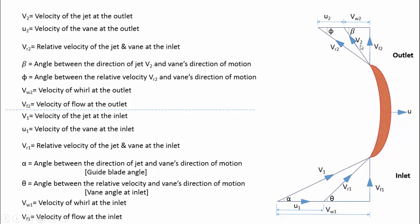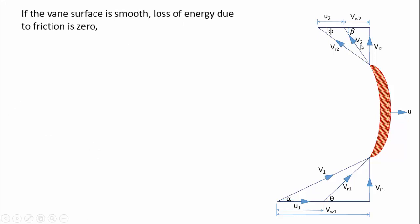However, we can assume that the blade is smooth, and the relative velocity at the inlet is equal to the relative velocity at the outlet. If you assume that the blade is moving linearly, the vane velocity U1 is equal to U2.